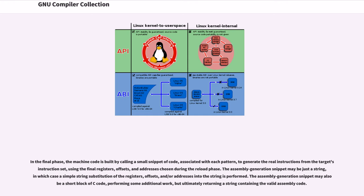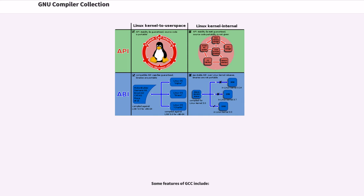In the final phase, the machine code is built by calling a small snippet of code associated with each pattern to generate the real instructions from the target's instruction set, using the final registers, offsets, and addresses chosen during the reload phase. The assembly generation snippet may be just a string, in which case a simple string substitution of the registers, offsets, and/or addresses into the string is performed. The assembly generation snippet may also be a short block of C code, performing some additional work, but ultimately returning a string containing the valid assembly code.